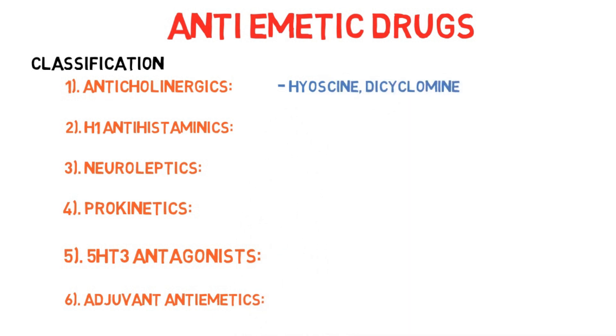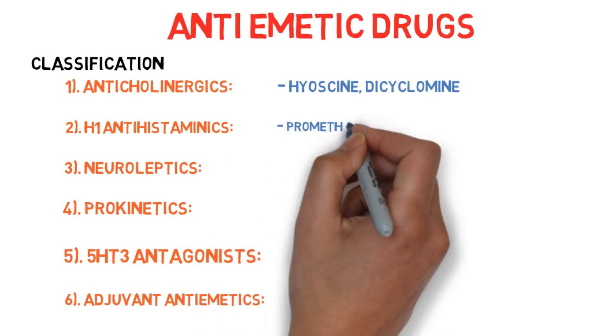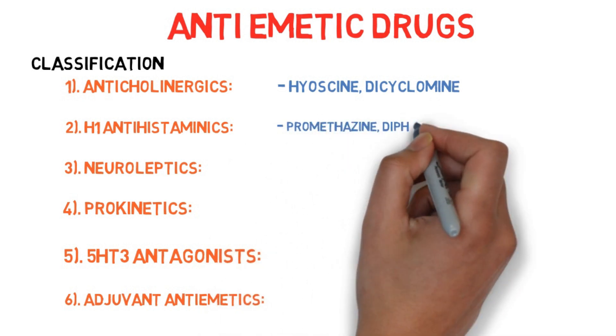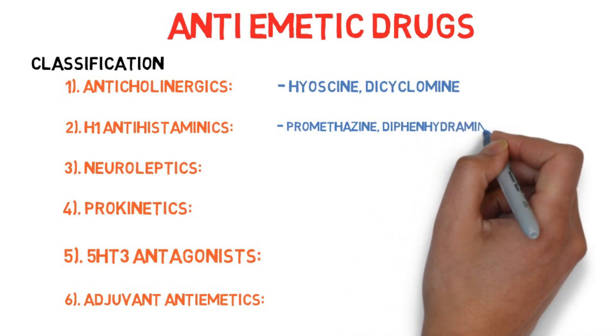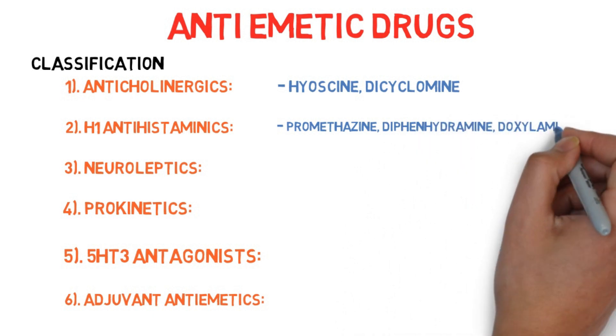Now let's mention the drugs in each class. The drugs in anticholinergics are hyoscine and dicyclomine. The drugs in H1 antihistaminics are promethazine, diphenhydramine, doxylamine, cyclizine, meclizine, and cinnarizine.